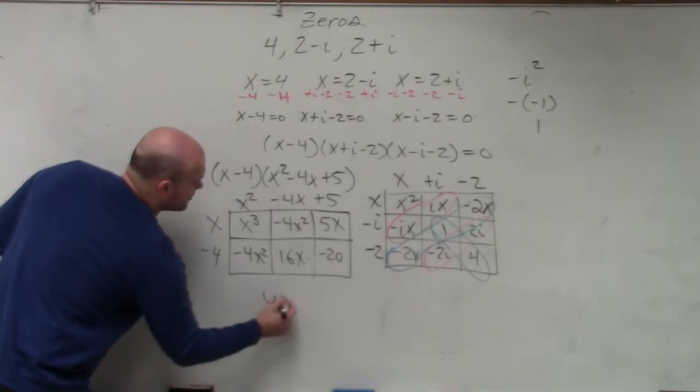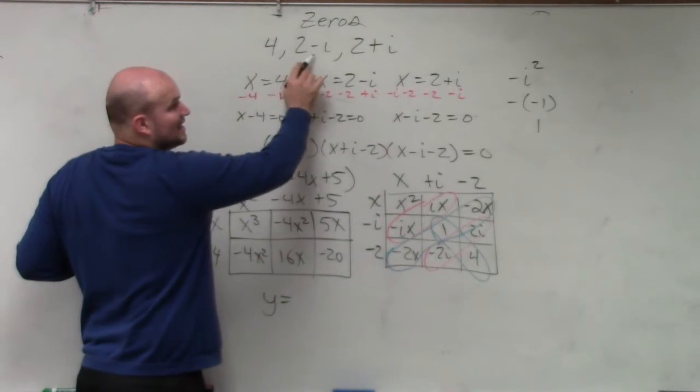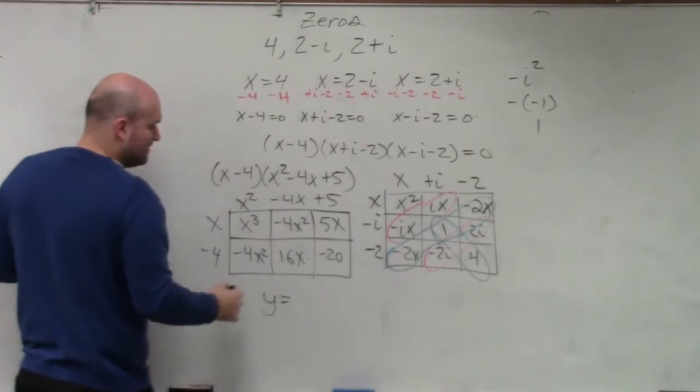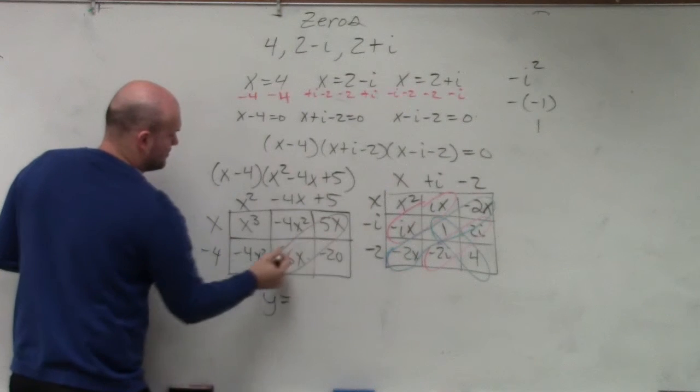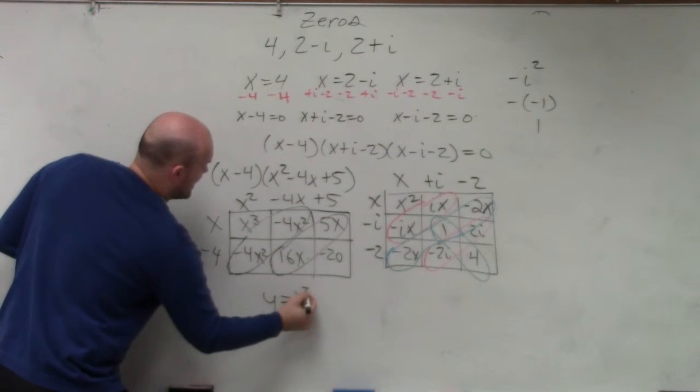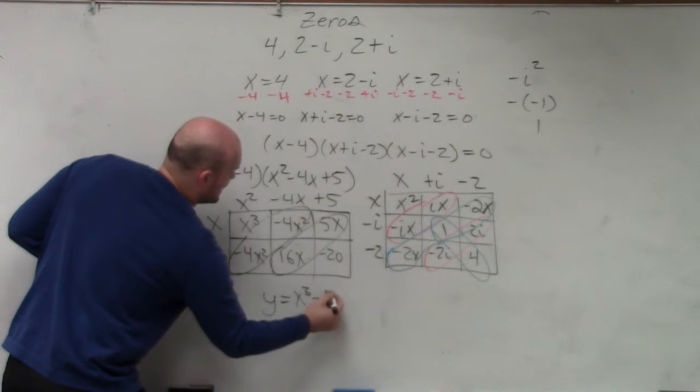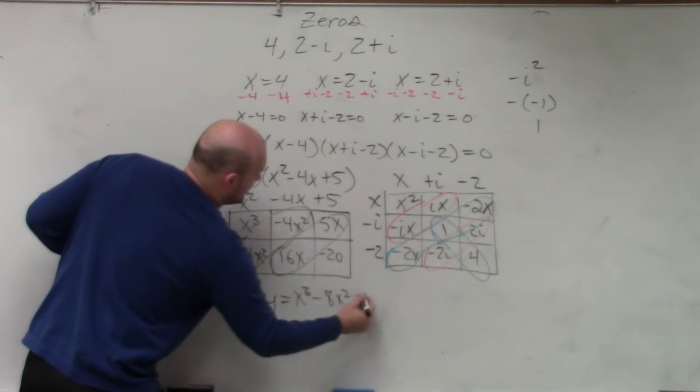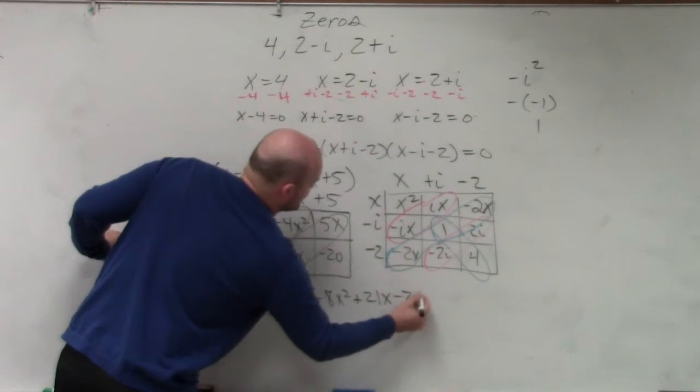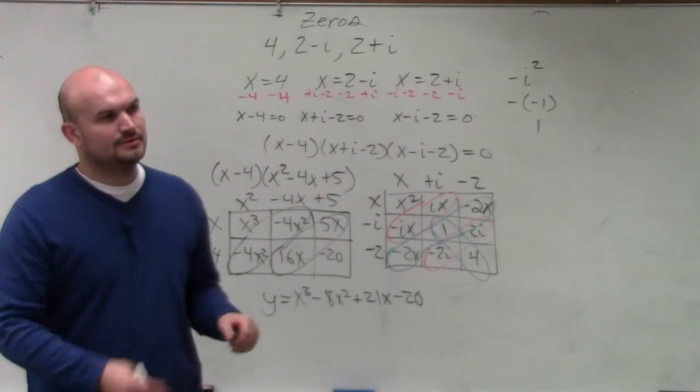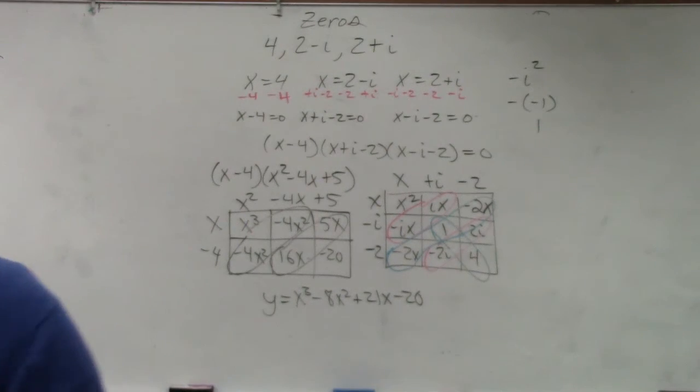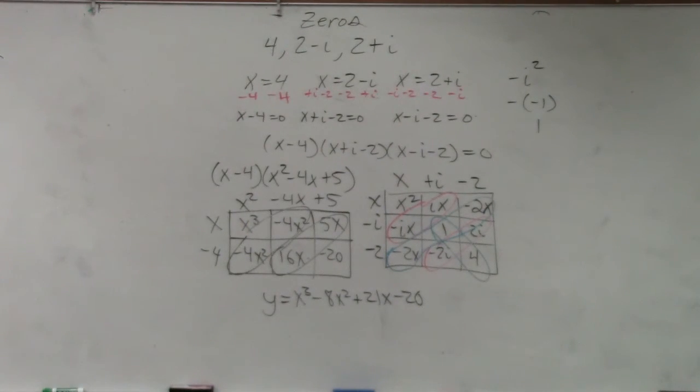So therefore, ladies and gentlemen, when you have the zeros 4, 2 minus i and 2 plus i, you now have the polynomial x cubed minus 8x squared plus 21x minus 20. It's just about applying the skills that you guys were given. There's nothing in this problem.